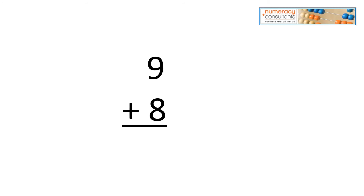Nine plus eight — we have a choice. What near double are we going to use? Are we going to use eight plus eight or nine plus nine? If we use eight plus eight, we've changed the problem from nine plus eight to eight plus eight, so we're one less than the answer. We would do eight and eight is 16, plus one is 17.